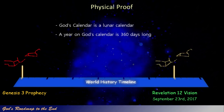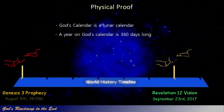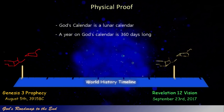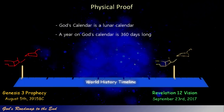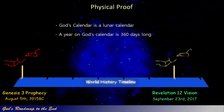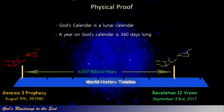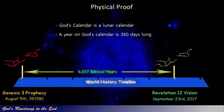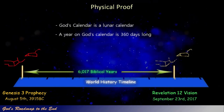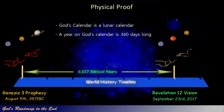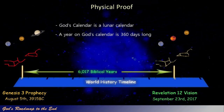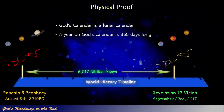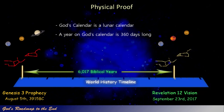This event is found to have occurred on August 5th, 3915 BC. There are then exactly 6,017 biblical years between the prophecy given by God in Genesis 3 and the fulfillment of John's vision given in Revelation 12. The only difference between the two markers is the planets and their order added to the stars of the constellation Leo, to make up the 12-starred crown on the head of Virgo.